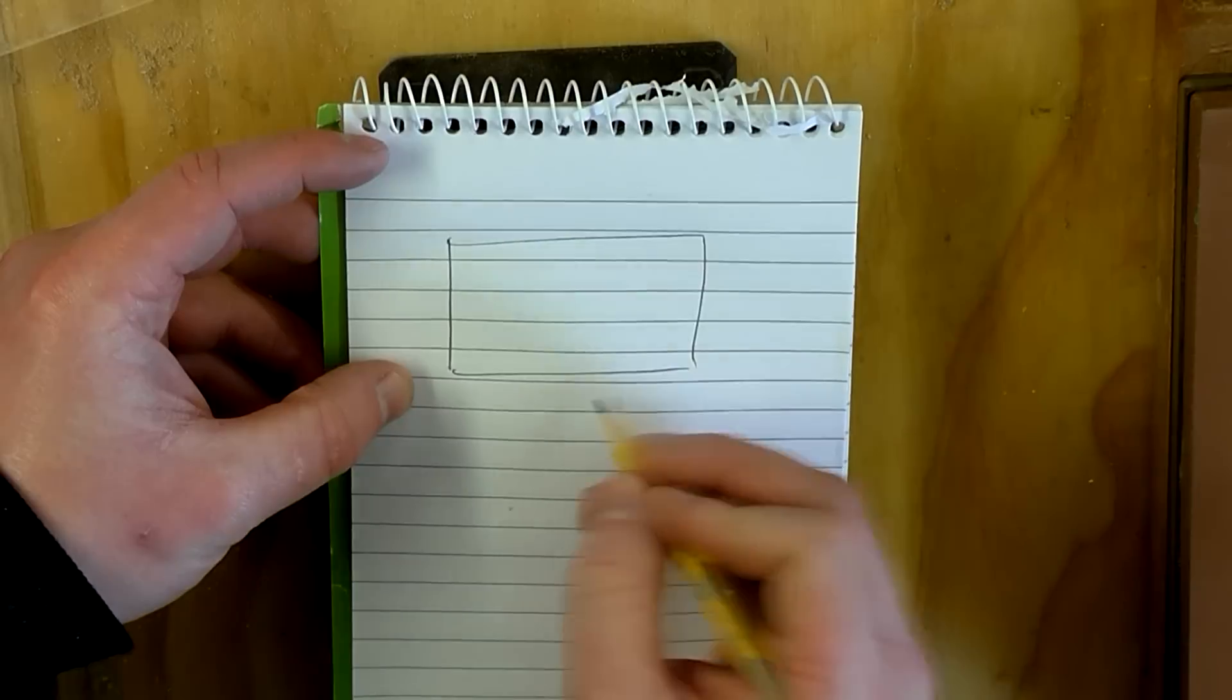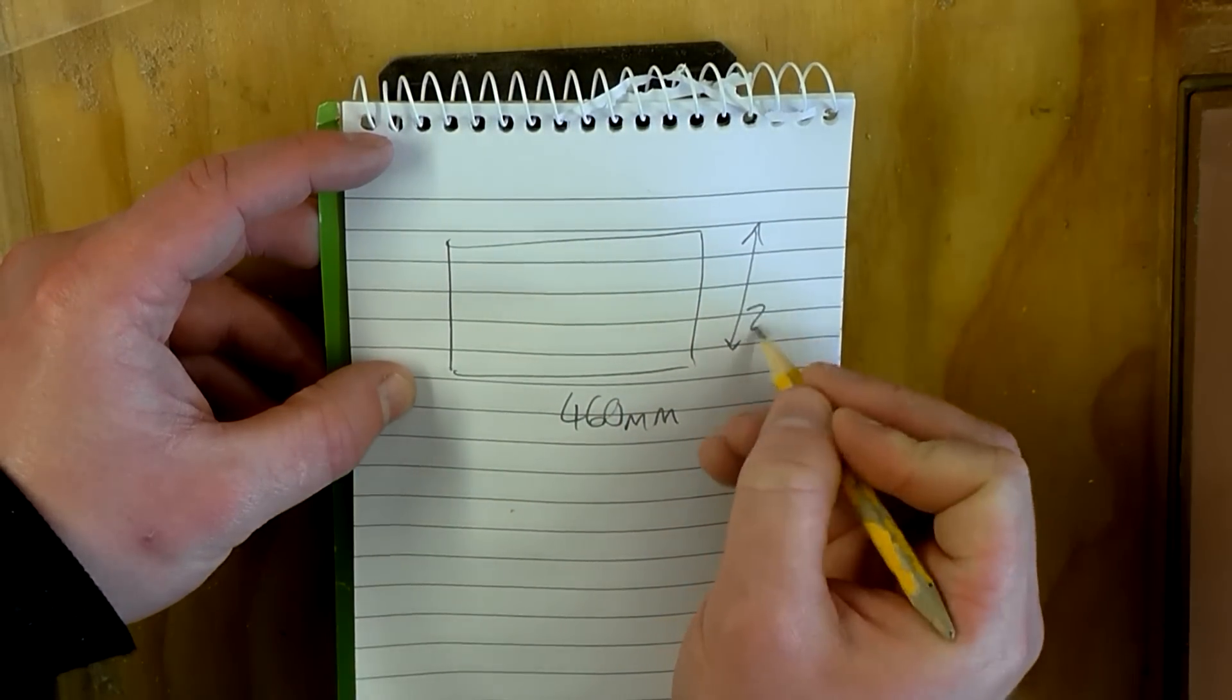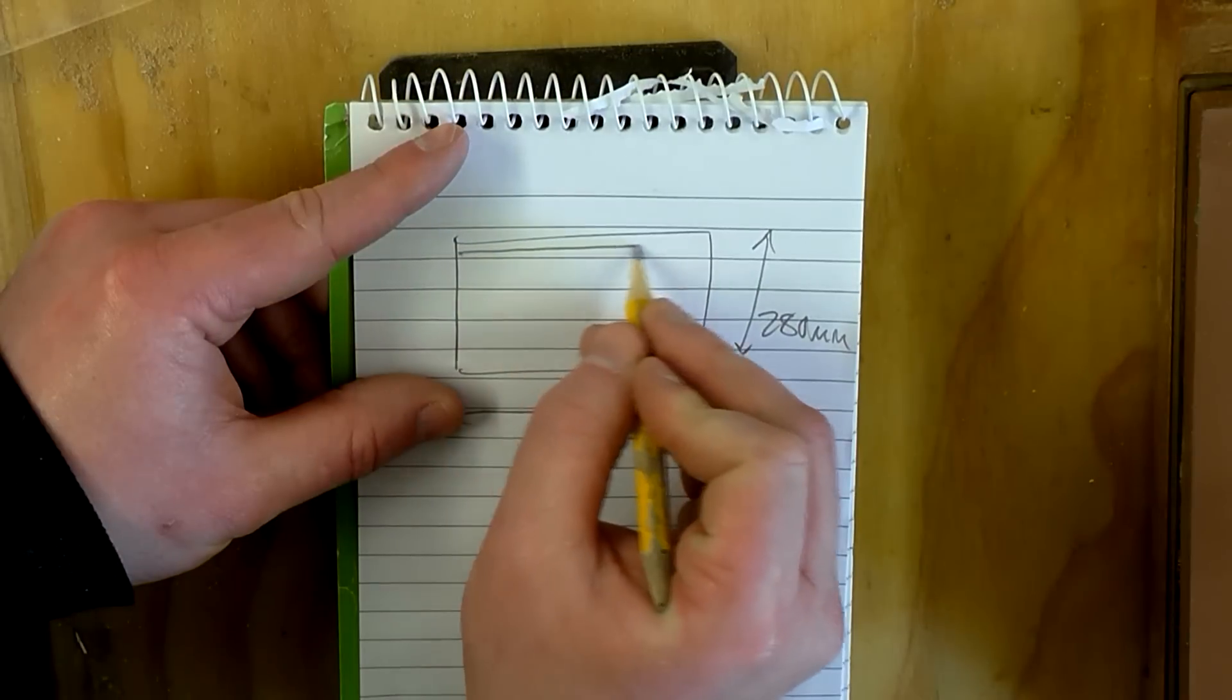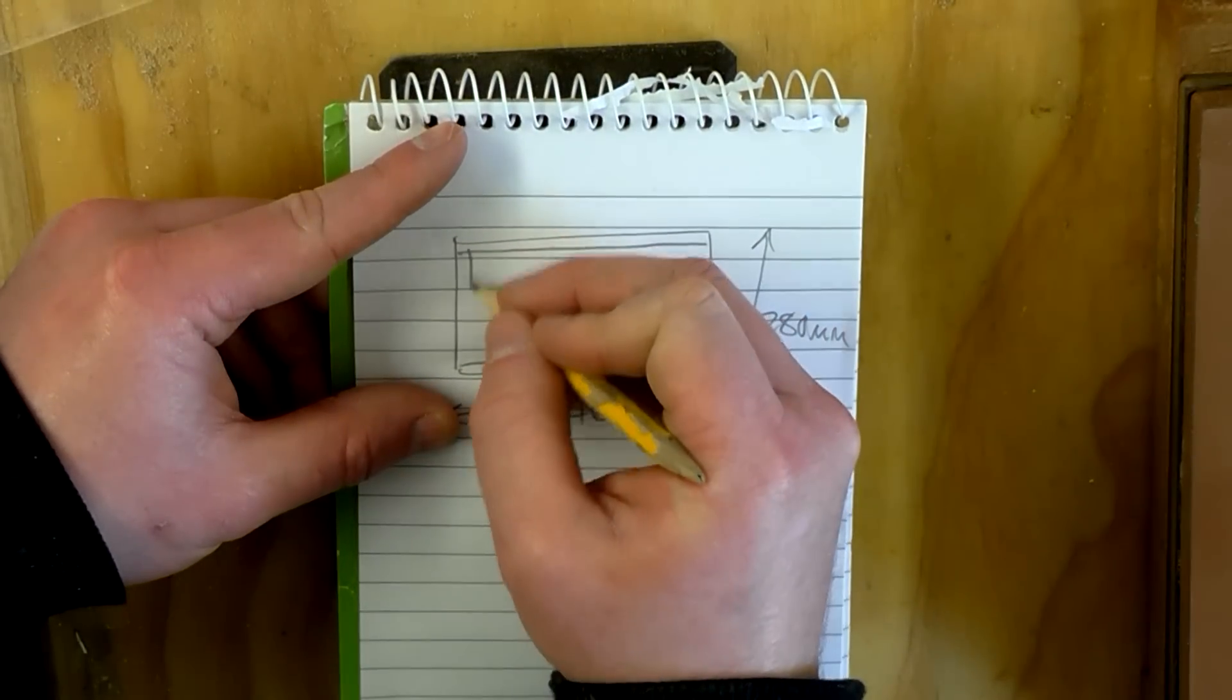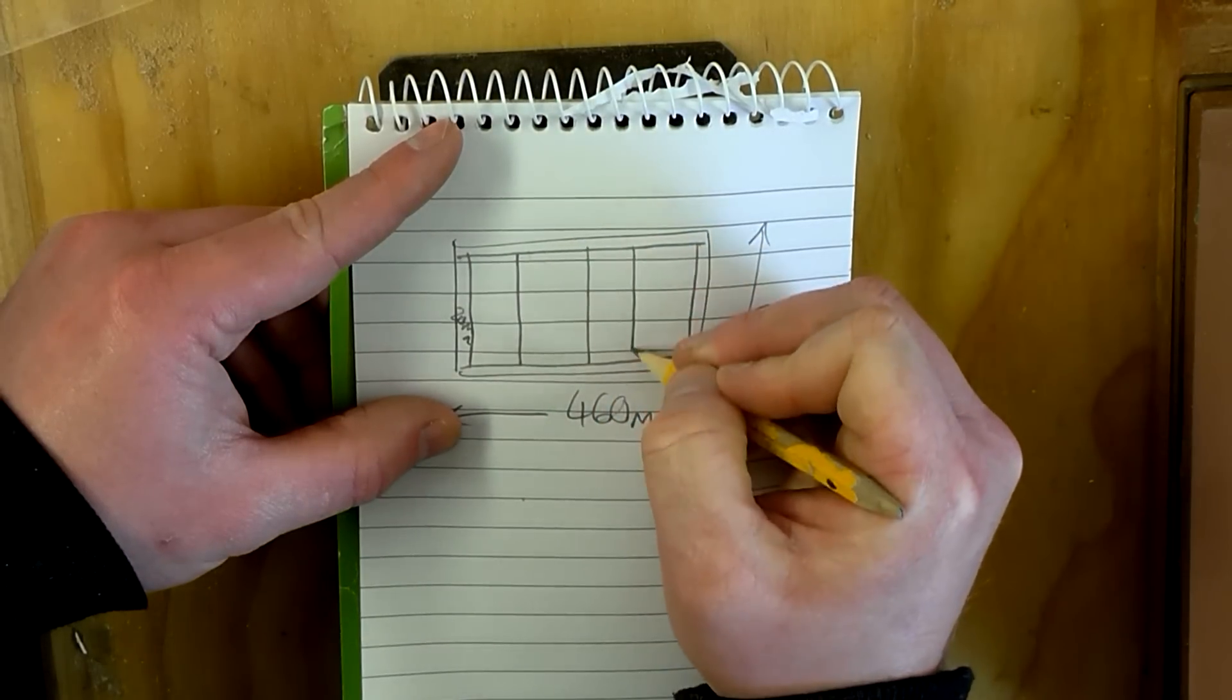I know that I want the overall size to be 460 millimeters by 280 millimeters so that it fits inside my drawer. I want some sort of border around the edges that's probably about 20 millimeters and then I'll need some spacers in between the stones.